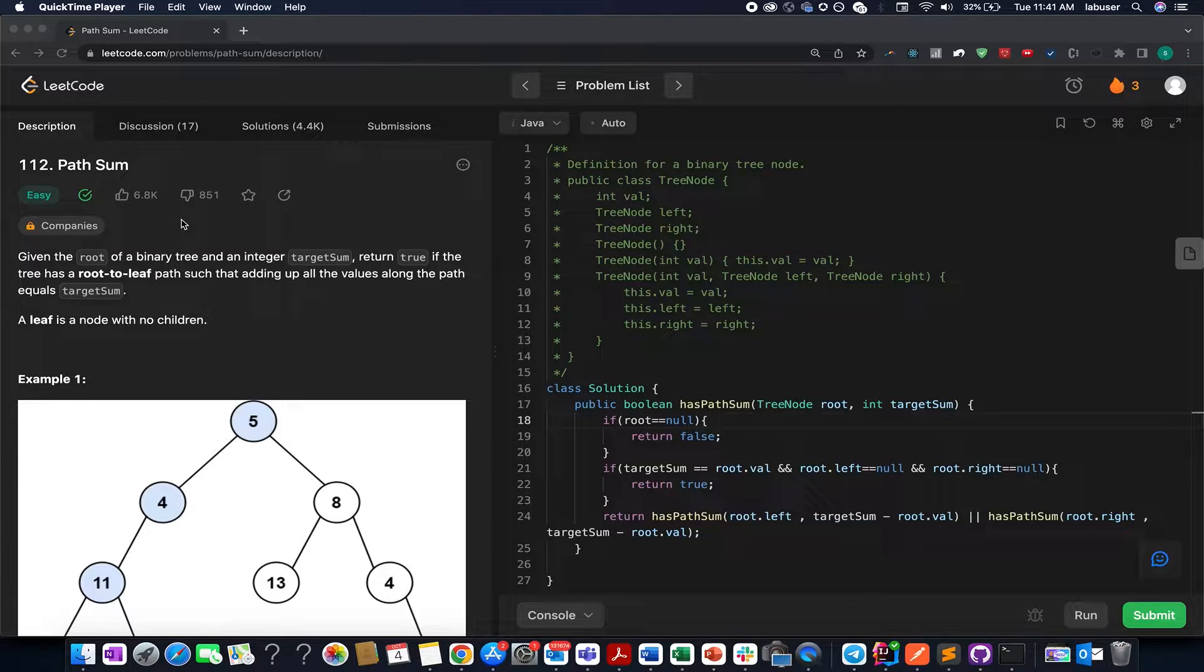The question says you are given a binary tree and an integer value. What do you need to do? You need to identify whether there exists a path starting from the root to the leaf such that all these nodes that lie in that path sum together to give you the target sum value.